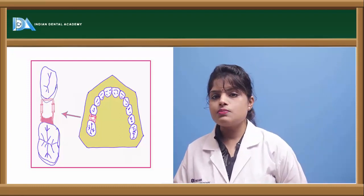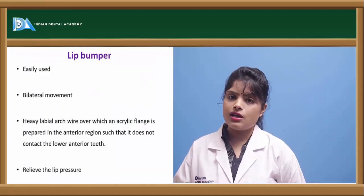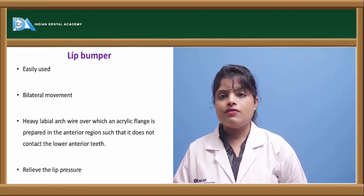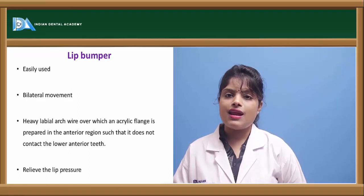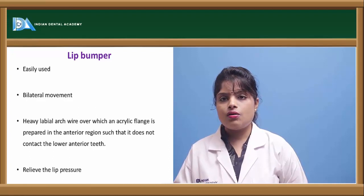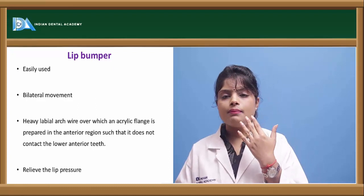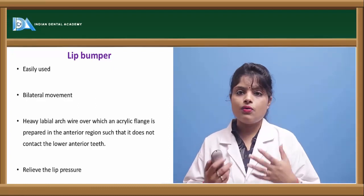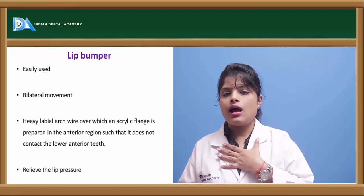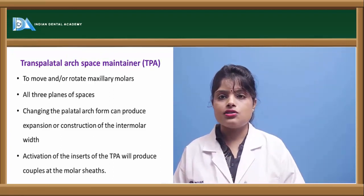Another type of space regainer is the lip bumper, generally used in the mandibular arch. It is fabricated with an acrylic flange in the space retainer. The lip bumper prevents the lip from pushing back the teeth and relieves lip pressure.